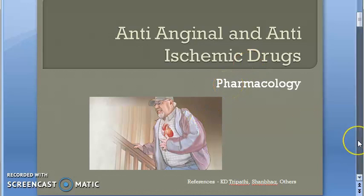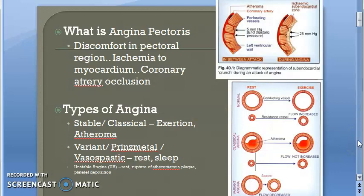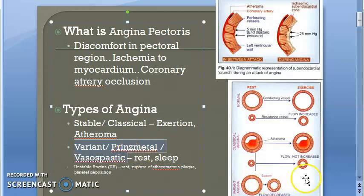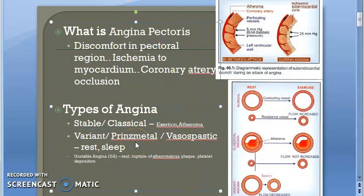We saw what angina means and the types of angina: stable or classical, and variant, Prinzmetal, or vasospastic. For stable or classical angina, it happens only on exertion and the usual cause is atheroma. For variant or Prinzmetal or vasospastic angina, it happens even during rest or sleep due to vasospasm.